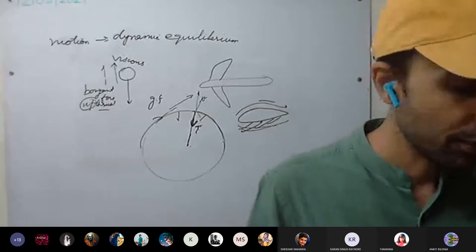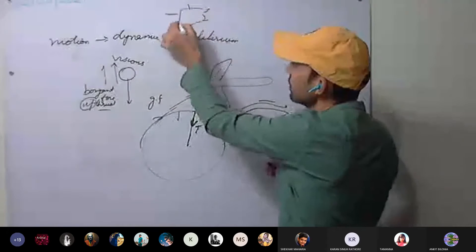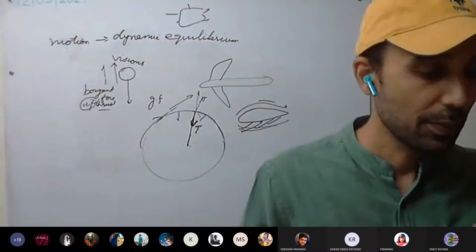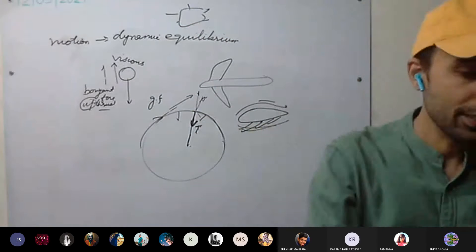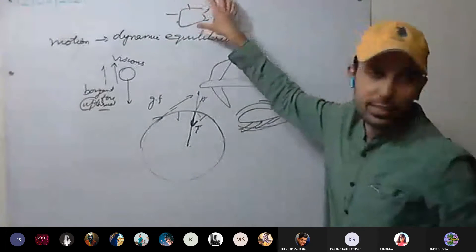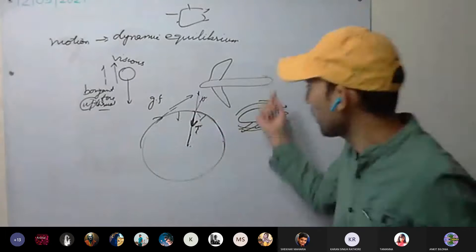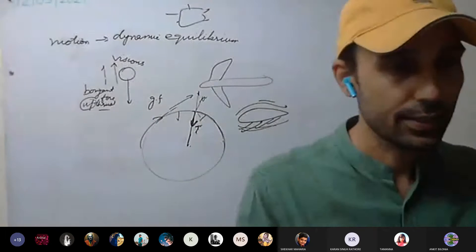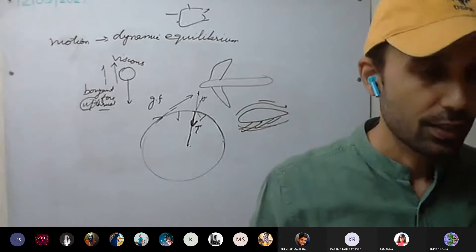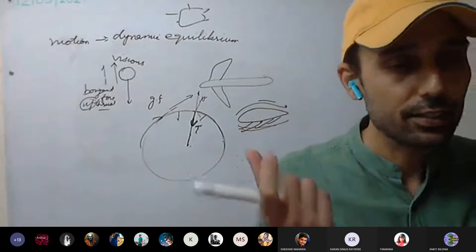Conditions for equilibrium. On page number six, the conditions are given. First: the resultant of all the forces acting on the body — the net force — should be zero. Second: the algebraic sum of the moments of all the forces about the point of rotation must be zero.